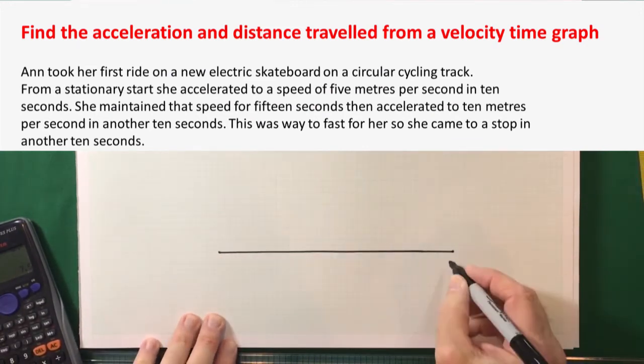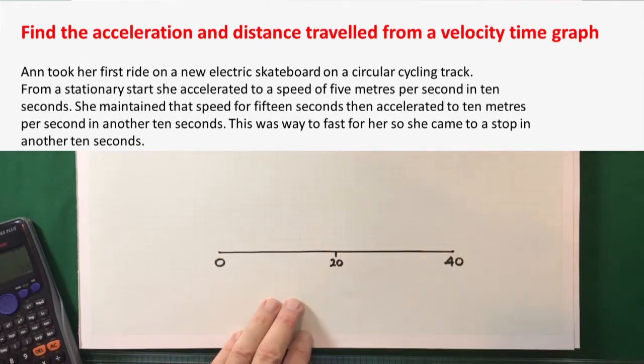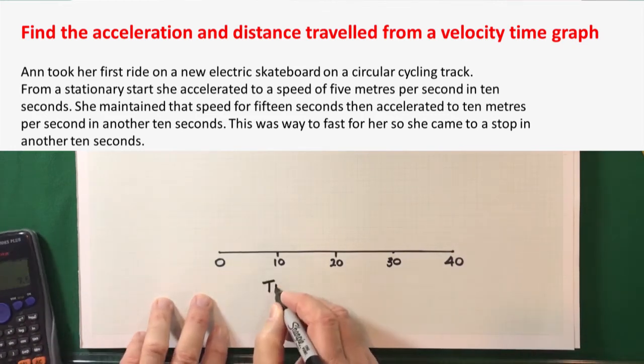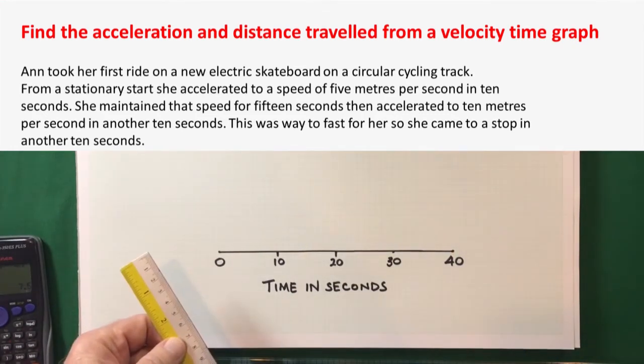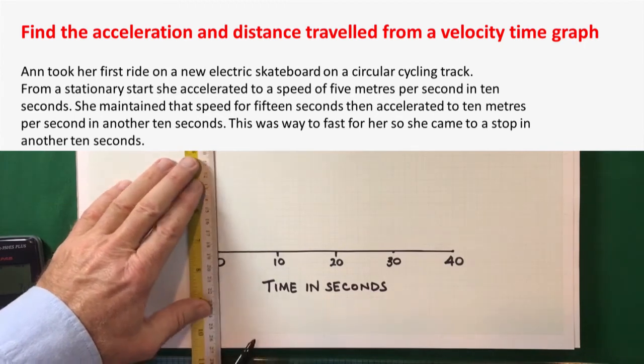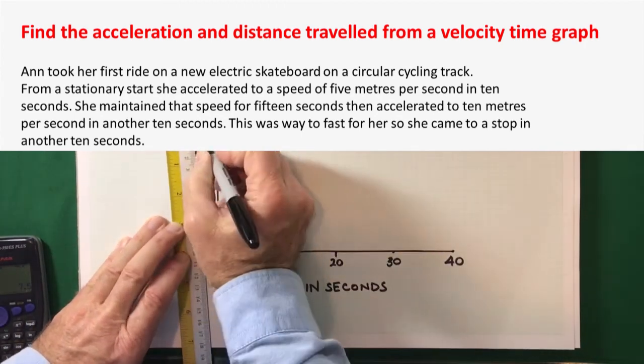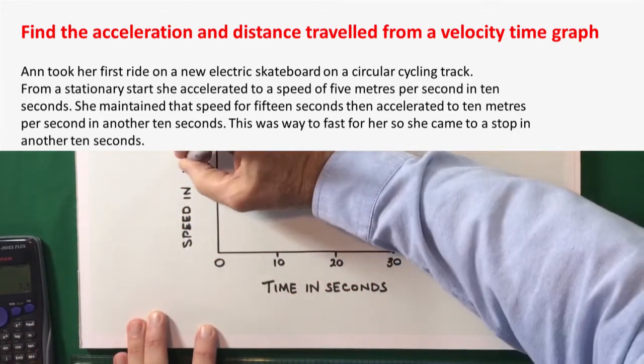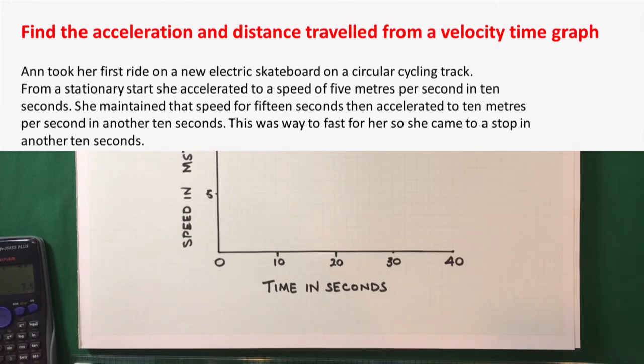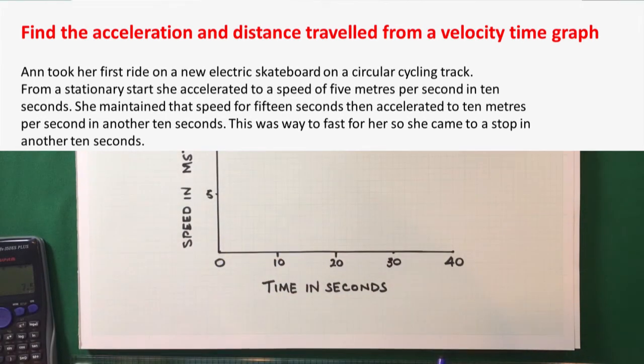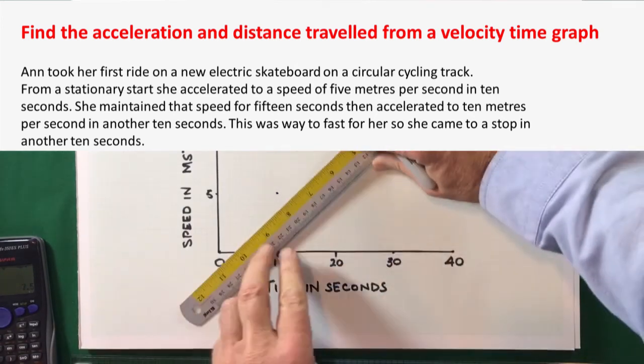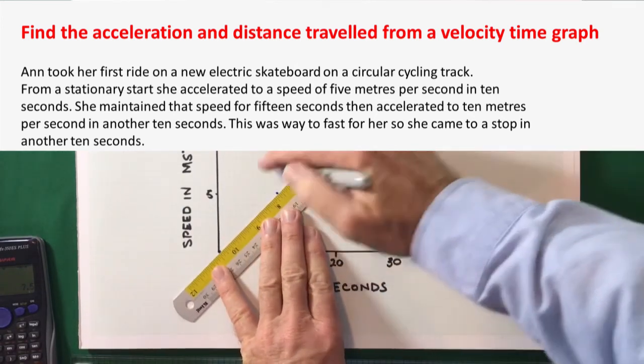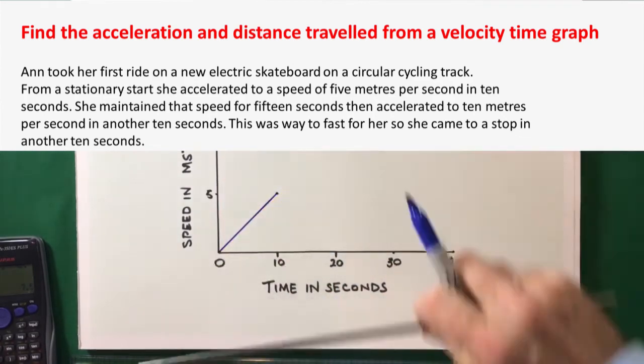Who took her first ride on a new electric skateboard on a circular cycling track. From a stationary start, she accelerated to a speed of 5 meters per second in 10 seconds. She maintained that speed for 15 seconds, then accelerated to 10 meters per second in another 10 seconds. This was way too fast for her, so she came to a stop in another 10 seconds. So, I've chosen a scale that seems reasonable to include all the times and the speeds.